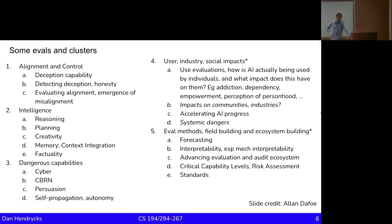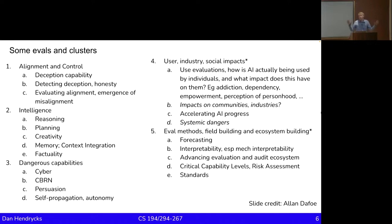Maybe you want to measure intelligence, so you need a planning benchmark or a creativity benchmark. Perhaps memory is important to benchmark as well. If we're looking at hazardous capabilities, you might look at cyber offensive capabilities or whether it knows things about chemical, biological, radiological, or nuclear weapons — that's the CBRN category. Maybe you want to evaluate how the model impacts society, such as whether it can be used to accelerate AI progress. There are a lot of different words here, basically.